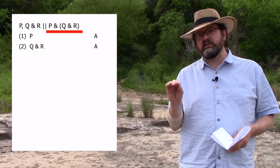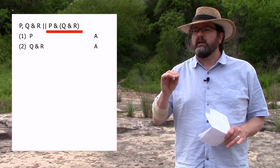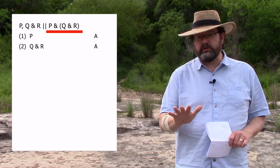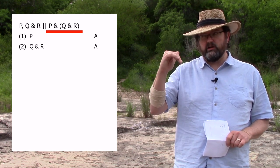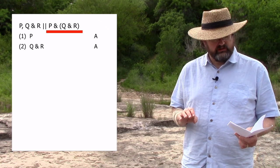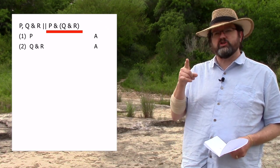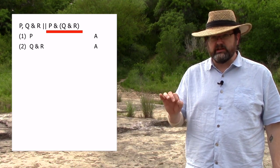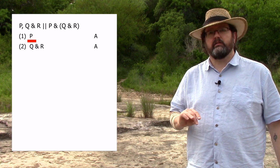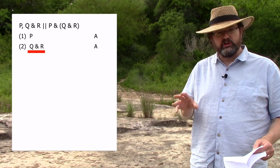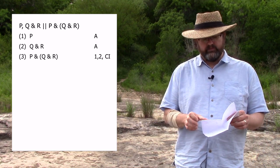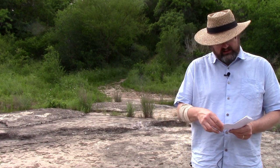The first few problems will look pretty straightforward, but as you'll see a little bit later, there might be many steps to reach the conclusion. We have P and the conjunction Q and R as our two assumptions, and we simply use conjunction introduction to infer the whole conjunction P conjoined with the conjunction of Q and R. Not a difficult one.